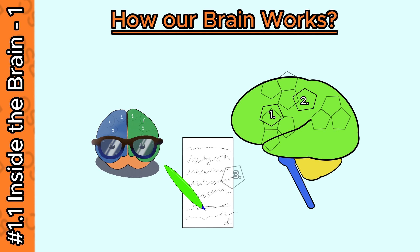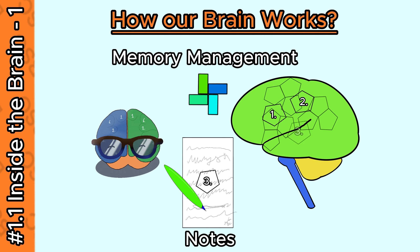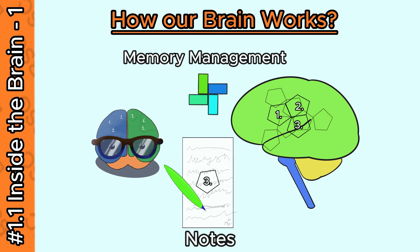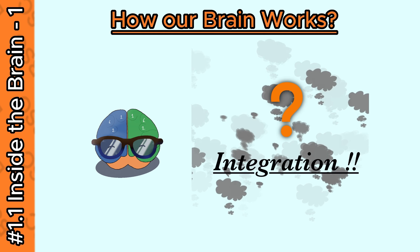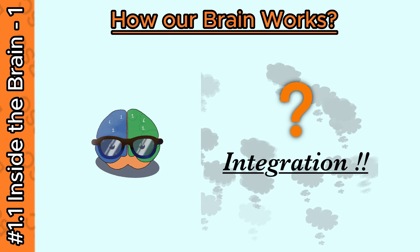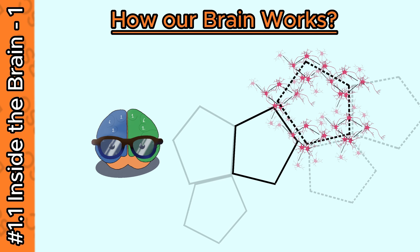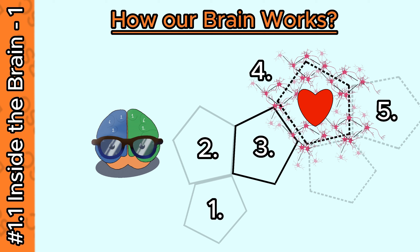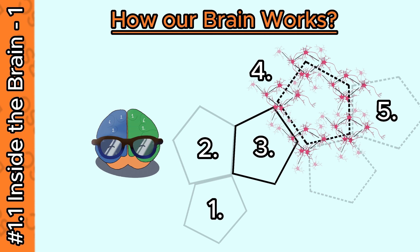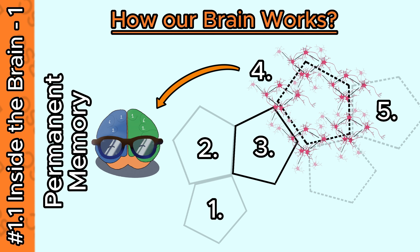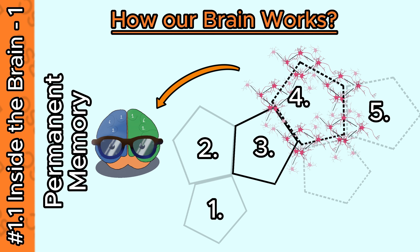What does it mean to integrate a new thought or memory into our brain? It signifies the discovery of new neuron firing patterns — ones that bring value or hold emotional connections. When these new neuron firing patterns are organized on top of old memories and stored in permanent memory, we consider that thought to be completely integrated.